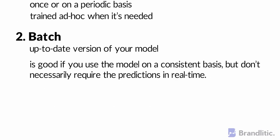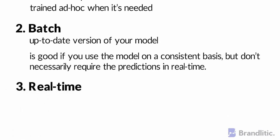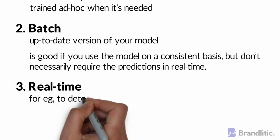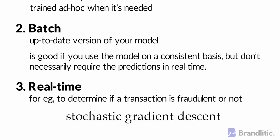Third, Real-time — in some cases, you want predictions in real-time, for example, to determine if a transaction is fraudulent or not. This is possible by using online ML models like linear regression using stochastic gradient descent.